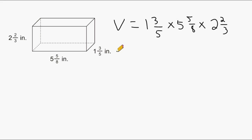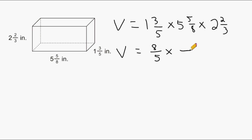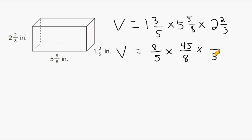Next we have to rename all of our mixed numbers as improper fractions. One and three-fifths will be renamed as eight-fifths. For five and five-eighths, we write our denominator exactly the same — that's an eight — and for the numerator we have eight times five, which is forty, and forty plus five is forty-five. And for two and two-thirds, the denominator is going to be three and the numerator is going to be eight.